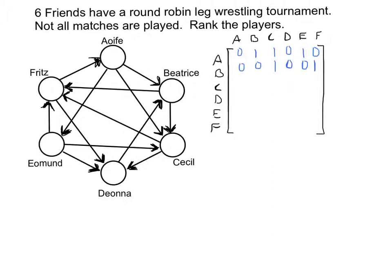Next row is Cecil. Cecil beat Fritz and Dana; the rest are zeros. And so on. Your matrix should look like this when you're done.